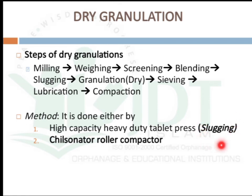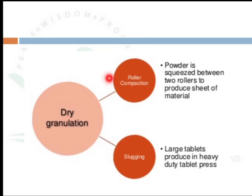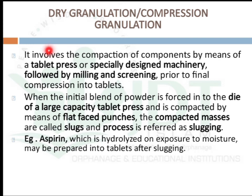Dry granulation can be done by two methods: by slugging using a high-capacity heavy-duty tablet press to produce large tablets, or by using a chilsonator roller compactor in which powder is squeezed between two rollers to produce a sheet of material, which is then chopped and reduced to granule size.